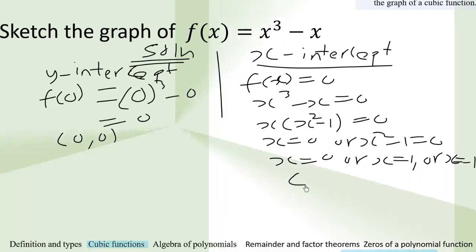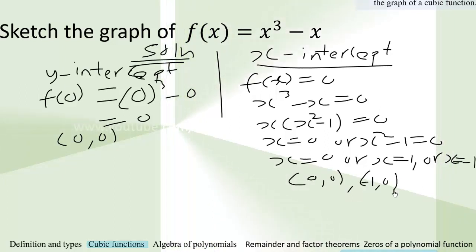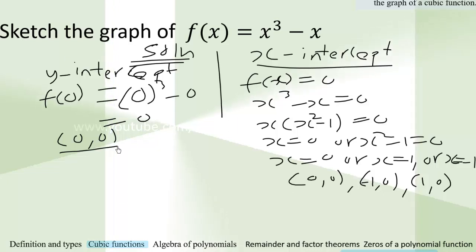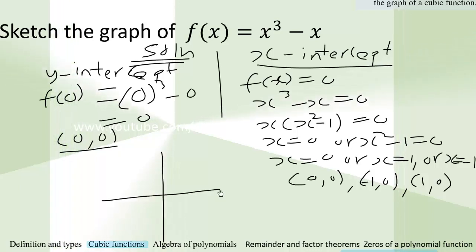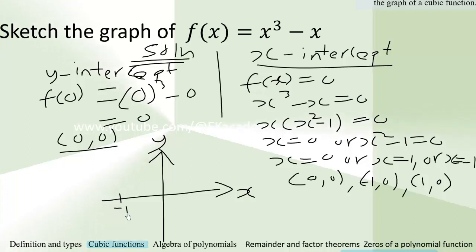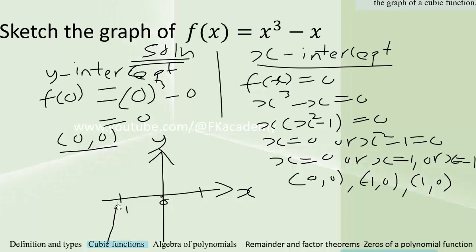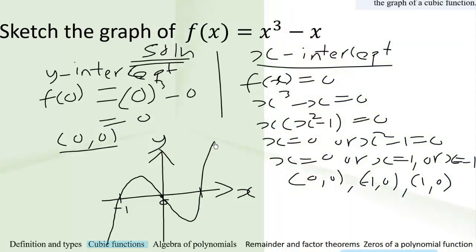So the x-intercepts are (0, 0), (-1, 0), and (1, 0), and the y-intercept is also (0, 0). Since a is greater than 0, the graph starts from below and goes up, comes down, then goes up again. We plot the x-axis and y-axis, mark the intercepts at negative 1, 0, and 1, and draw the graph passing through these points — going up, passing through, coming down, passing through, and going up. That is f of x equals x cubed minus x.